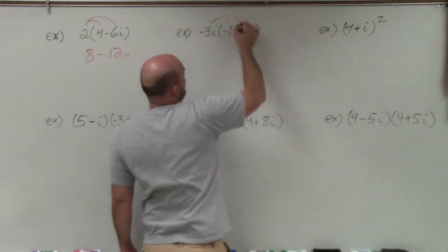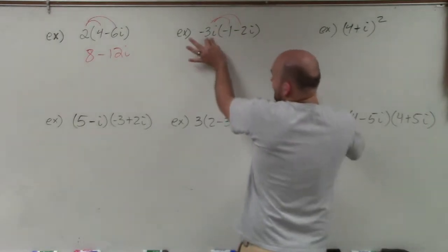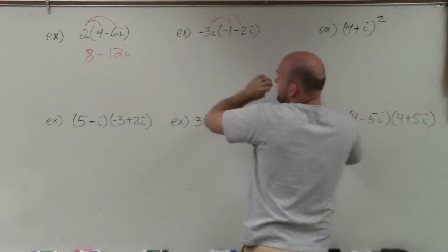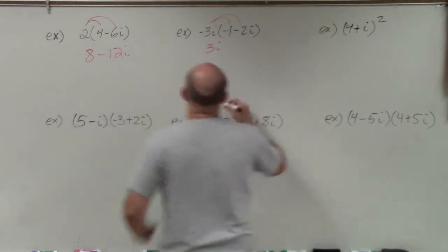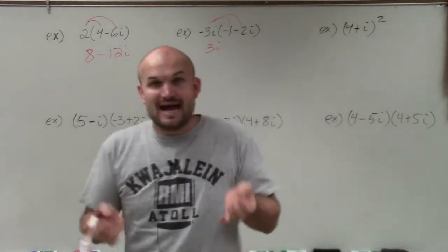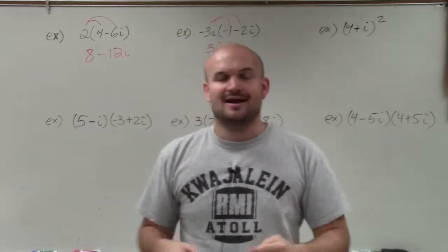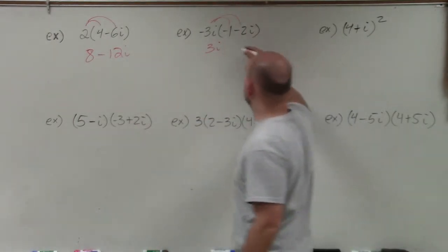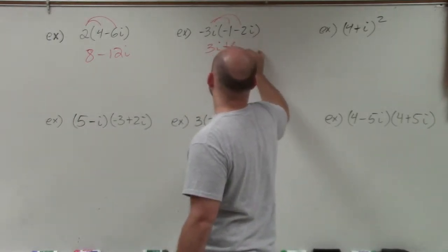Now we're multiplying an imaginary number times a complex number. Anytime you multiply imaginary times a real, you multiply the coefficients and leave the imaginary unit. So negative 3i times negative 1 is positive 3i. For negative 3i times negative 2i, we have two imaginary units — just like x times x is x squared, i times i is i squared. So negative 3 times negative 2 gives positive 6i squared.